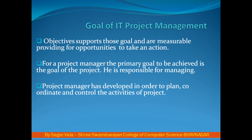For a project manager, the primary goal to be achieved is the goal of the project. For the project manager, the most important thing is whether the project's goal is achieved or not — through different actions, different task distributions, different types of controlling and monitoring. The project manager is responsible for managing this.